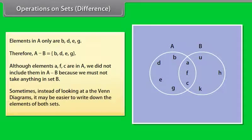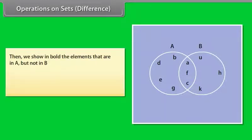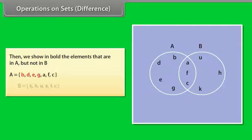Sometimes, instead of looking at the Venn diagrams, it may be easier to write down the elements of both sets. Then, we show in bold the elements that are in A but not in B. A = {B, D, E, G, A, F, C}. B = {K, H, U, A, F, C}.